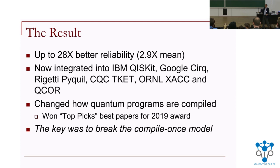This very simply gave about a 28x improvement in fidelity by avoiding bad qubits and couplers. It changed the way compilation is done — basically now everyone uses a noise-aware compiler and everyone recompiles based on calibration data. The key was to break the abstraction of compiling once. Very simple, but it showed us that we should look beyond how we're used to doing these things.